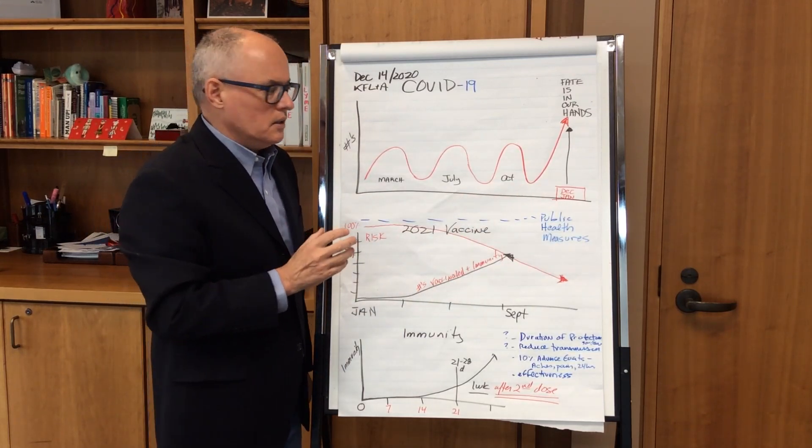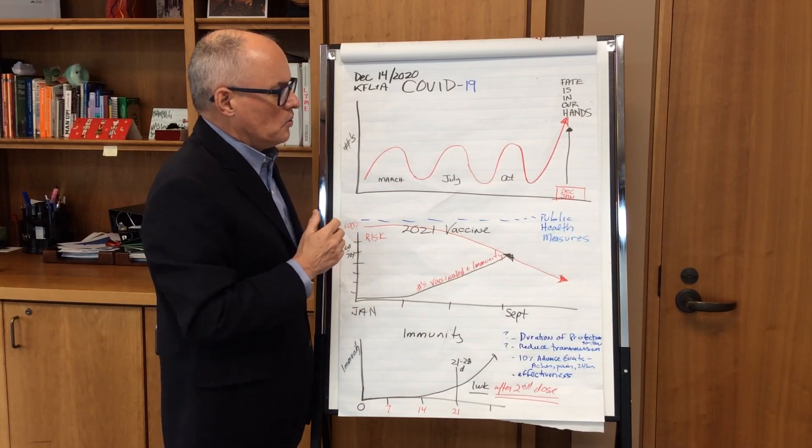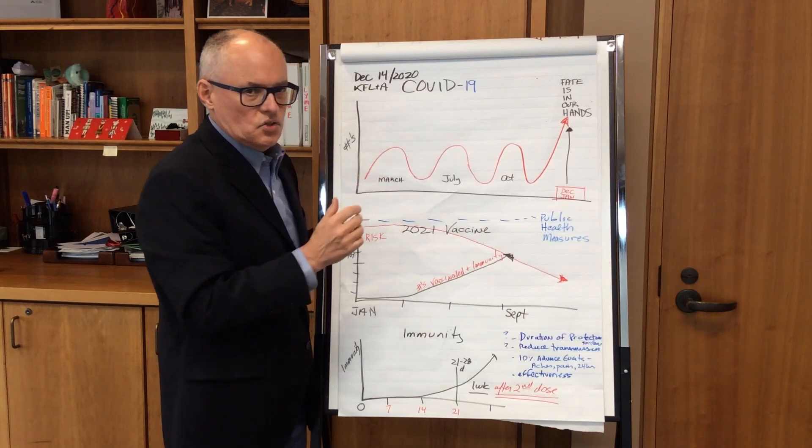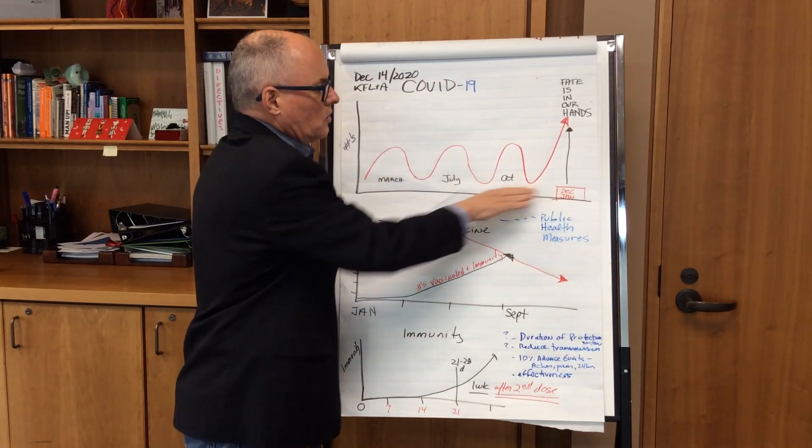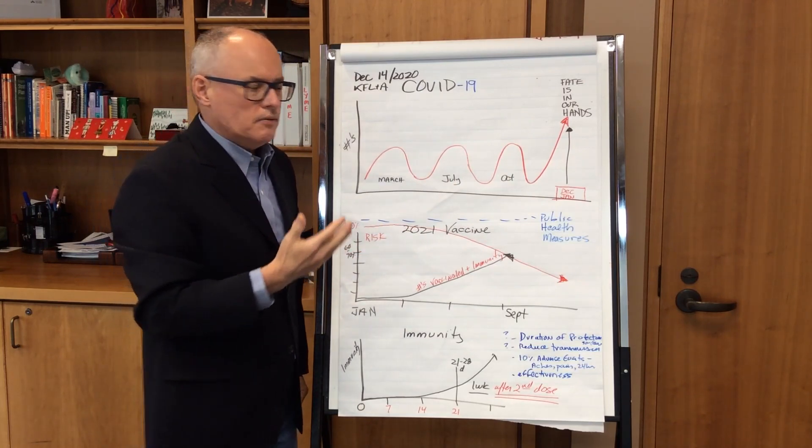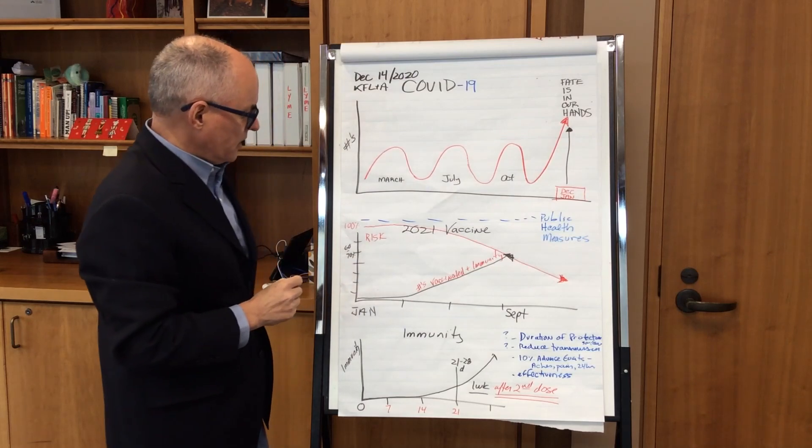We want to go into the holidays with a lower rate of illness because we know coming out of it that people will have socialized to some extent and we may have a rise in January. The lower we go into the holidays, the better. This trajectory is not the right trajectory, but it's up to the community. We have a choice to make—please make the right choices heading into the holiday season.